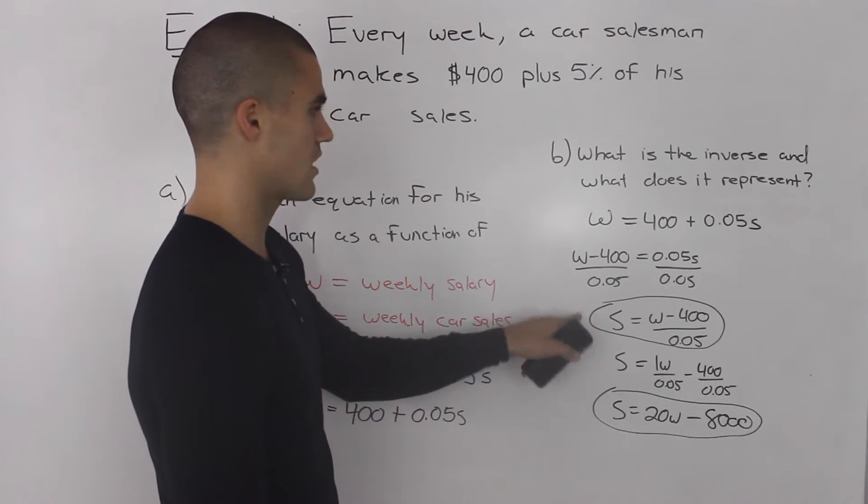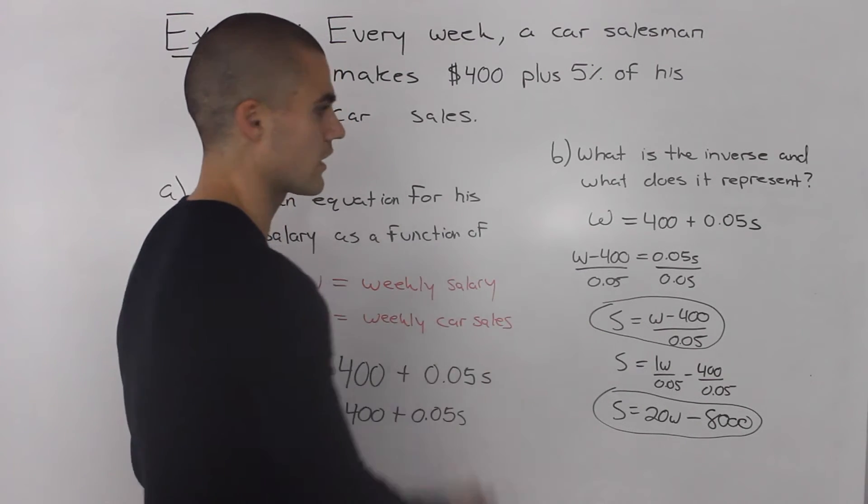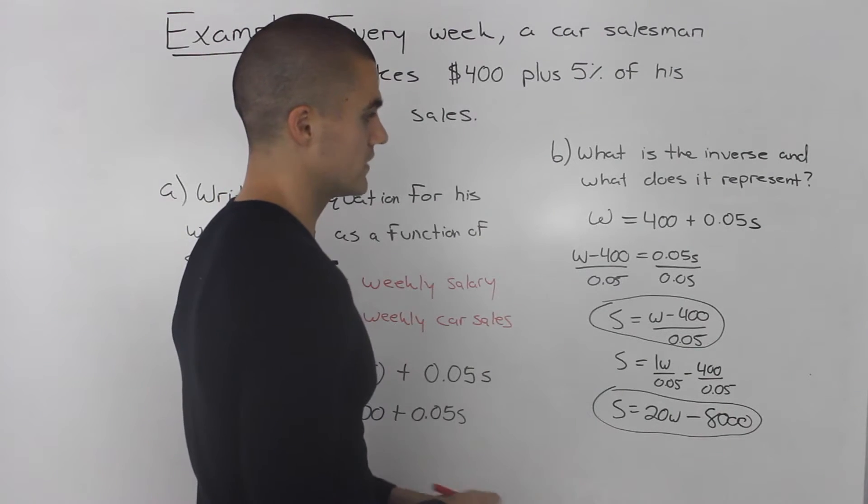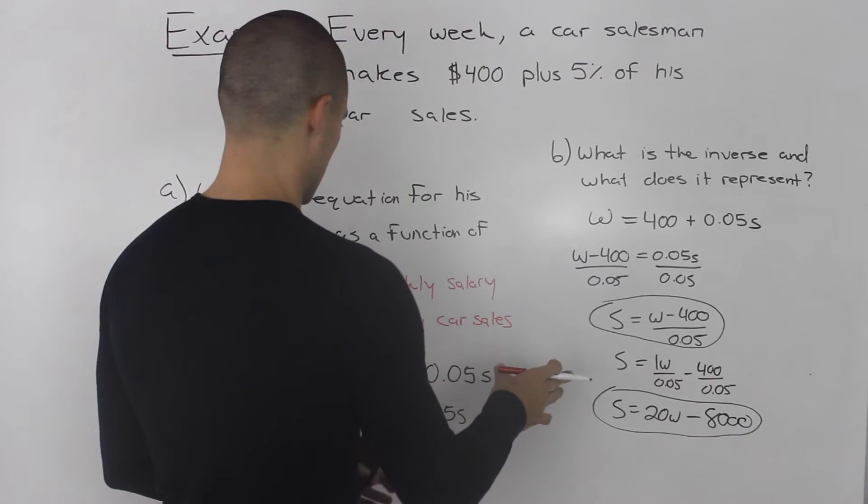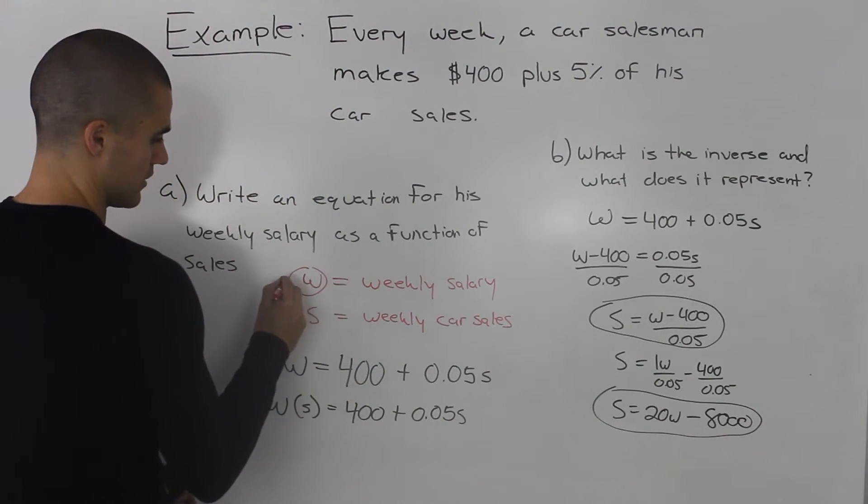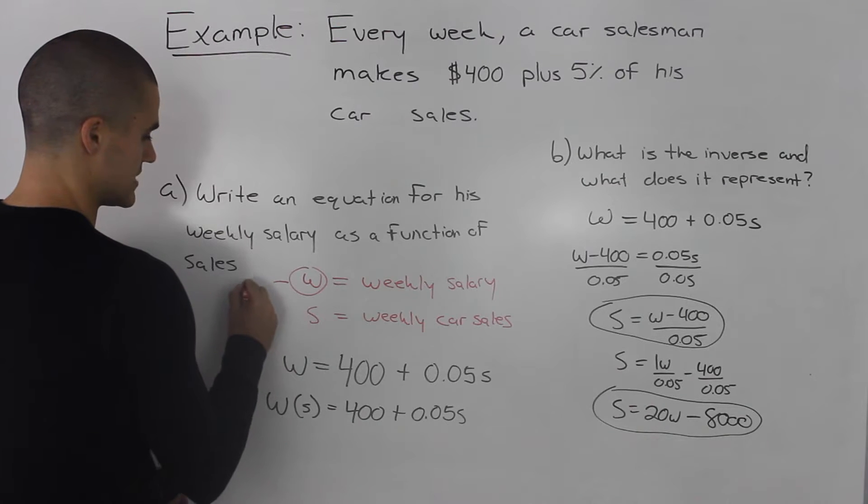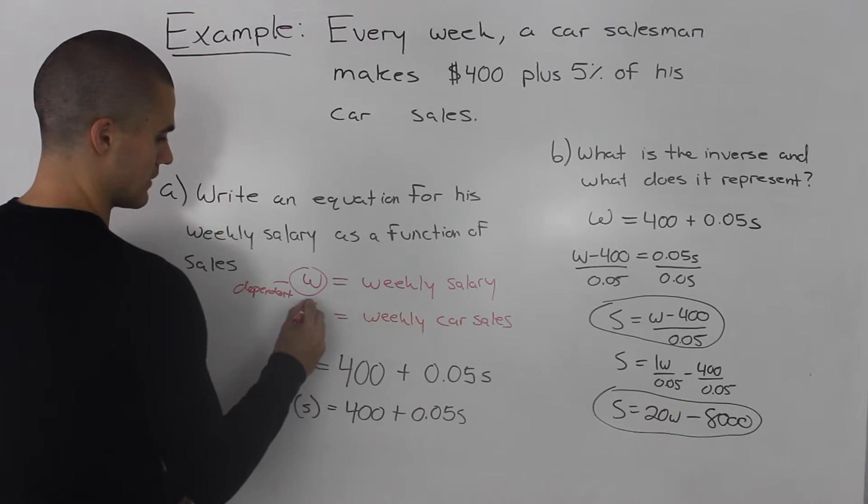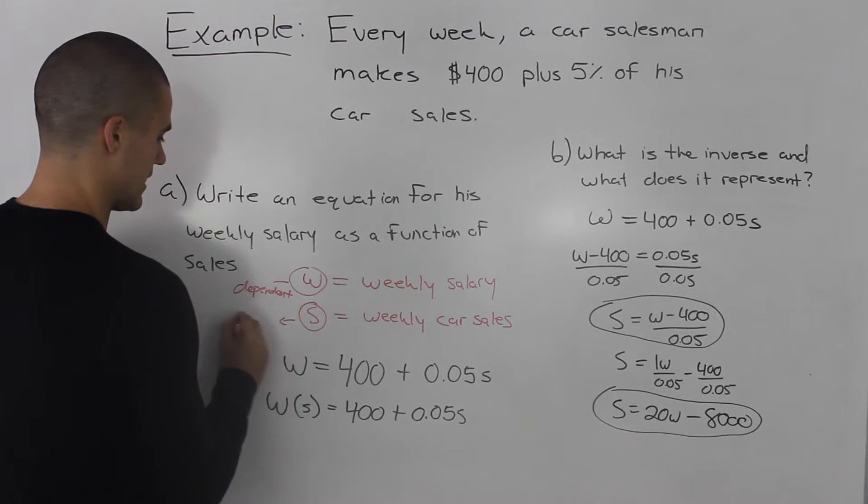Now, to answer the second part of part B, what does this represent? Well, as I mentioned before, in part A, this W here, the weekly salary, was the dependent variable. And the car sales was the independent variable.